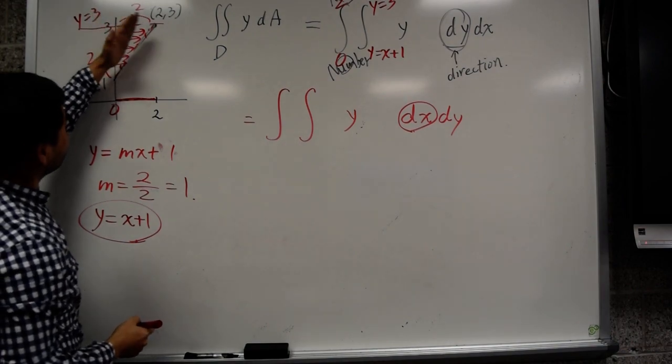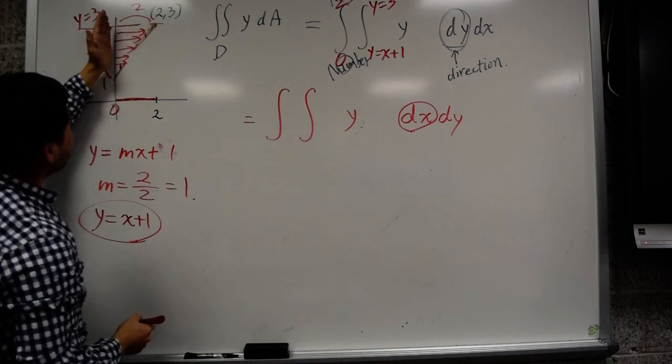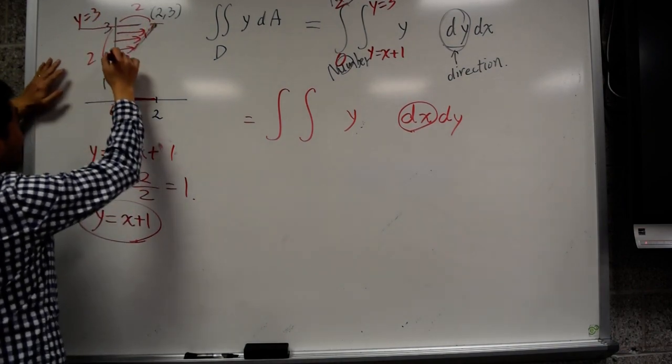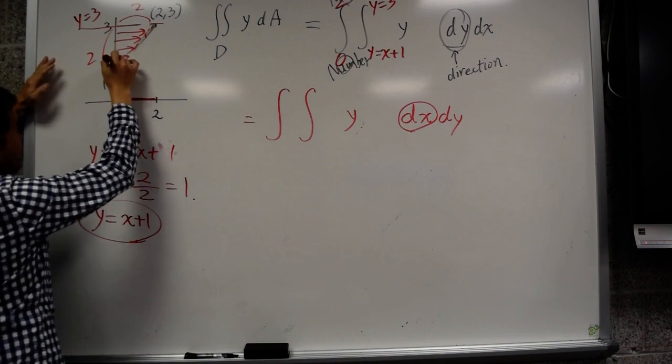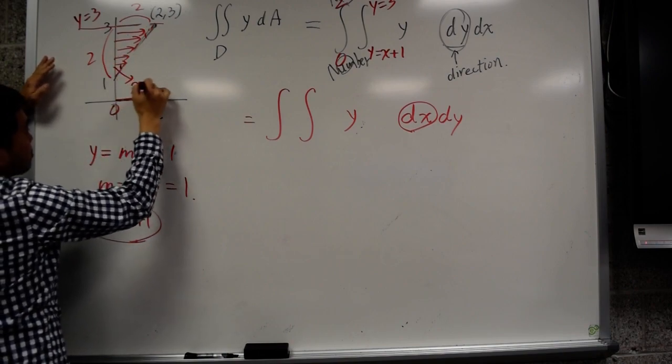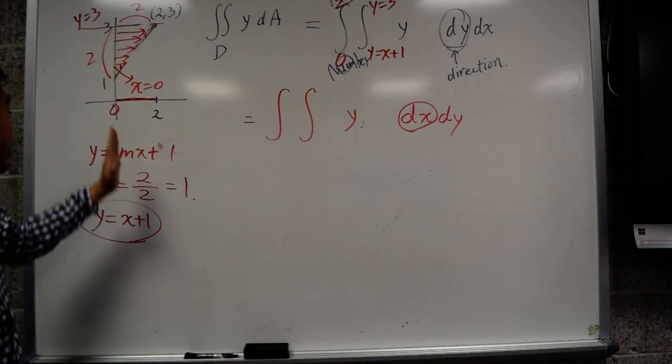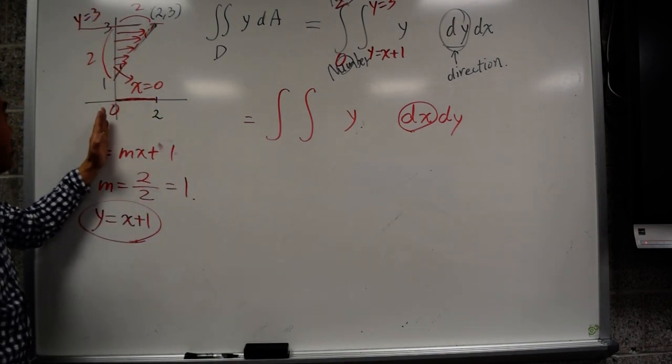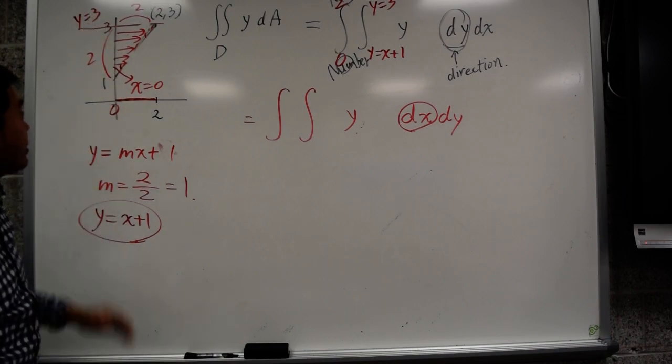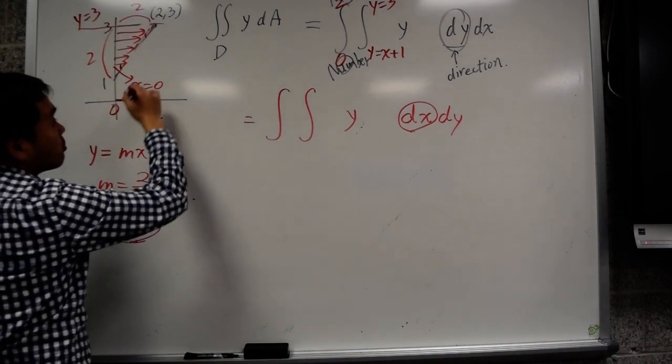You start from this, you end there. Now the equation for this, it's a vertical line, so what's this equation? This equation is x equal to 0. Remember, vertical lines have equation x equal to number. And since it passes through 0, x equal to 0 is this right here.